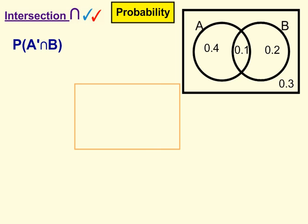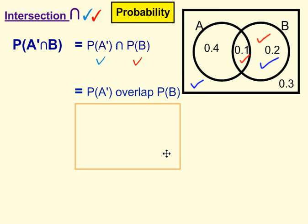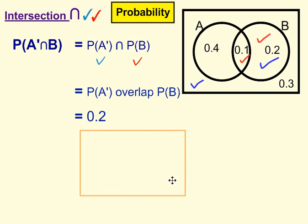Third example: the probability of not A intersection B. We're going to draw it apart and tick where not A is. So the regions that don't contain A are this region here and this region here. And now our second section is to tick everywhere that contains B — so here and here. For intersection, we're looking at the regions that contain two ticks; if it's only one tick we can disregard it. We can see that's this region here — where not A overlaps with B — and we've got 0.2.